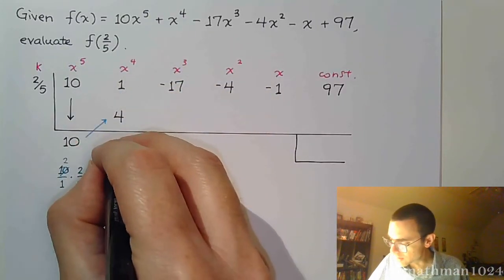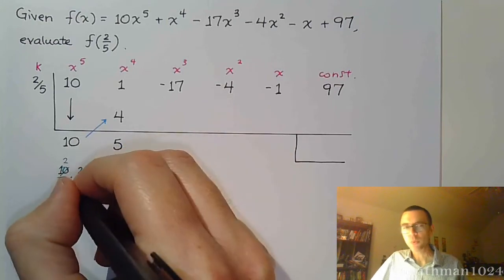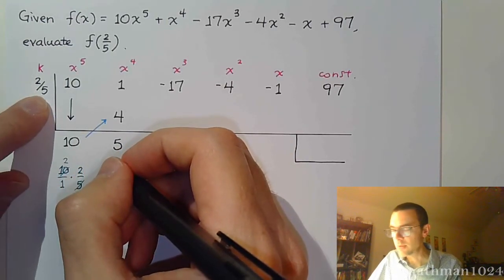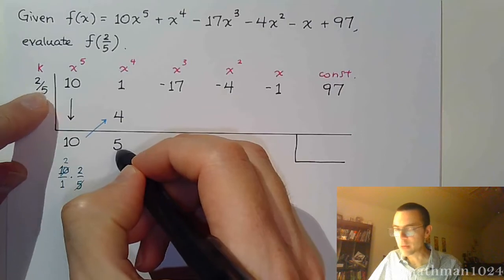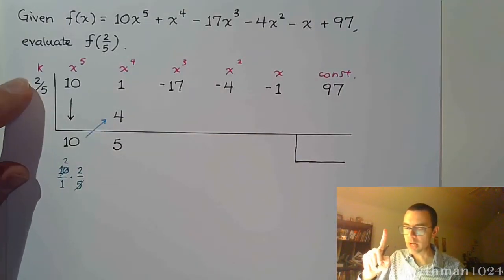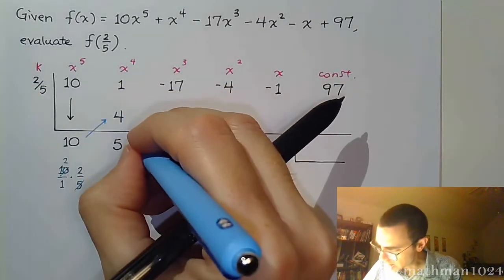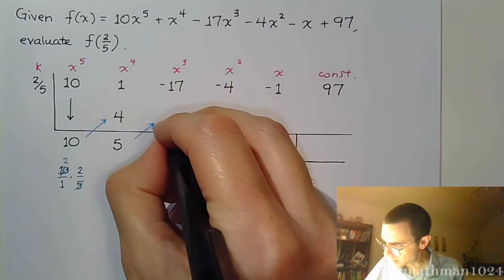So 1 and 4 is 5. So let's do what we just did here. Instead of multiplying by 2, divide by 5 first. So 5 divided by 5 is 1, 1 times 2 is 2. So the product here is 2.